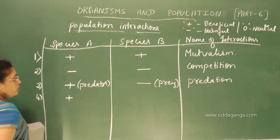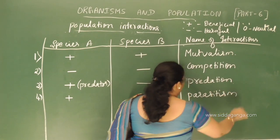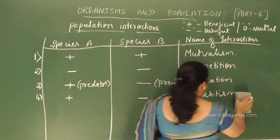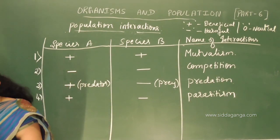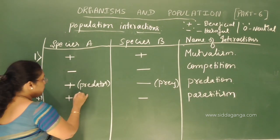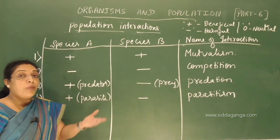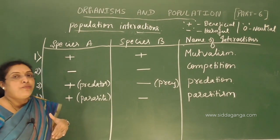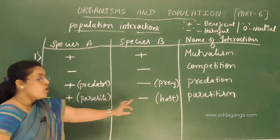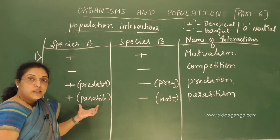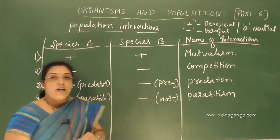One more: one species is benefited and the other one is harmed. The benefited one is the parasite. In human health and disease, roundworm is an endoparasite. The parasite is going to be benefited whereas the host is harmed because the parasite gets its nutrition from the host. That type of interaction is called parasitism.